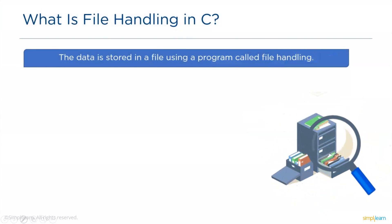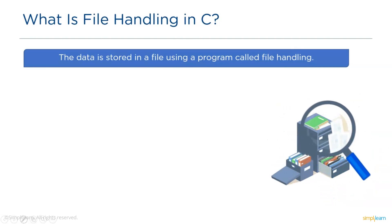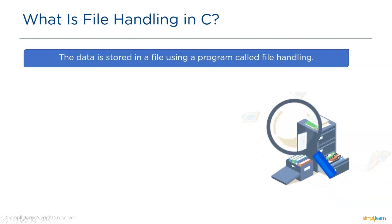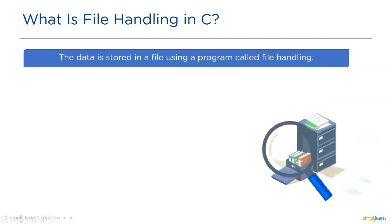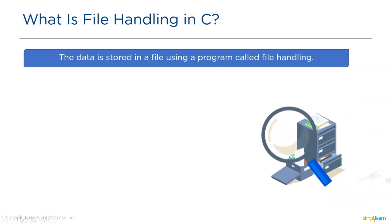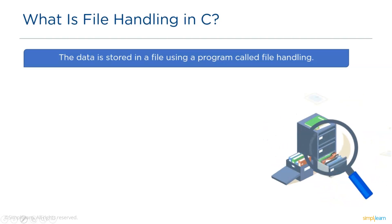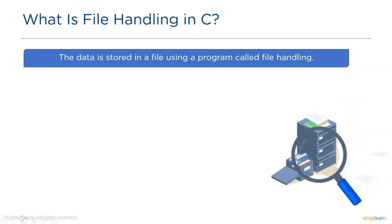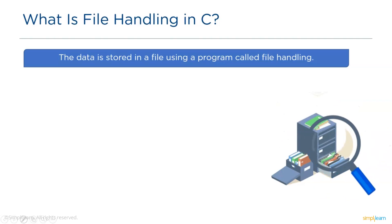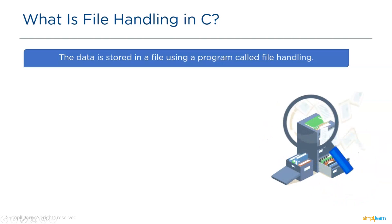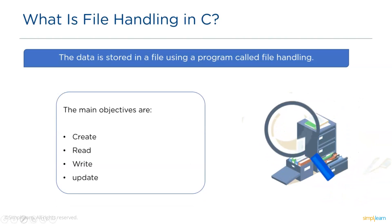As we all know, to maintain or organize data we use files. To understand why file handling is used, consider an example of a program's input and output. We store values in variables and that data is stored temporarily in RAM. The data will be lost whenever the program is terminated or when the system is switched off. When we want our results stored permanently in a secondary device, we use file handling functions. The main objectives of file handling are to create, read, write, and update files.